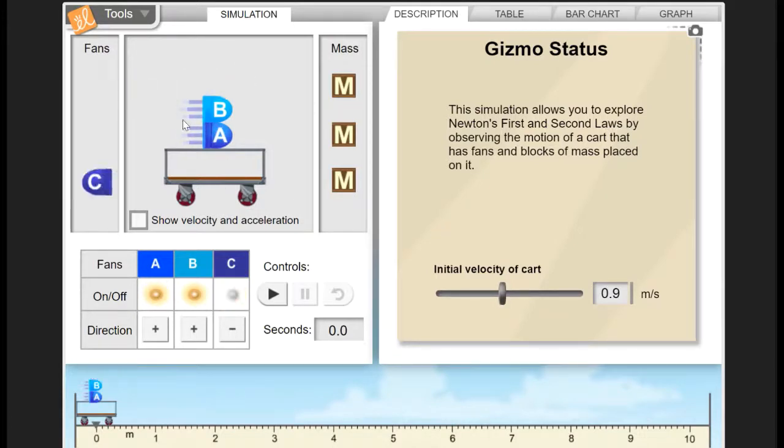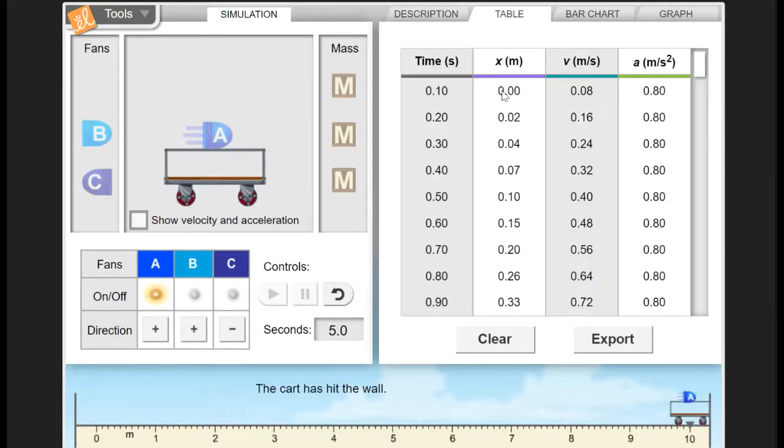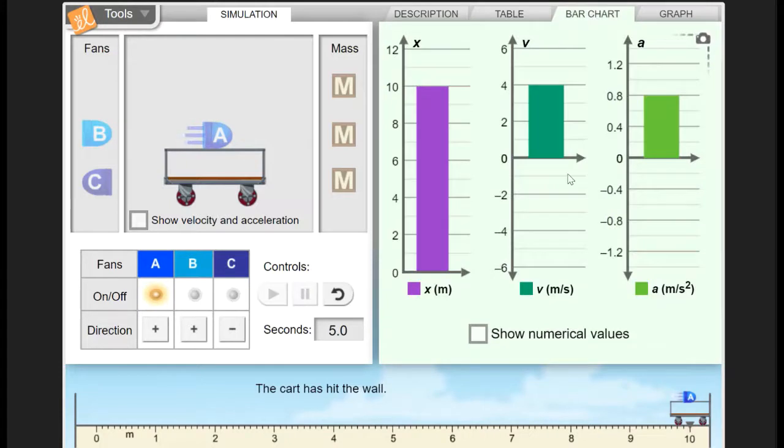Now as these are moving, I'm going to move these back over here. We also have some data that's recorded in the table, a bar chart, and a graph. So I'm going to put this back to zero. I'm going to play this one forward one more time, and now we can take a look at the data. So we have our time, we've got our displacement, velocity, and acceleration. We can also look at that in terms of a bar graph—our displacement, velocity, and acceleration.